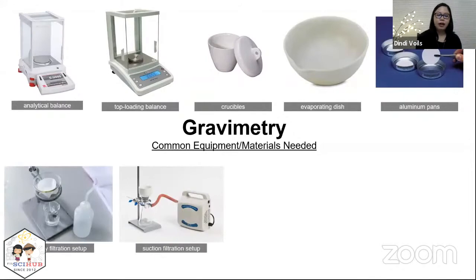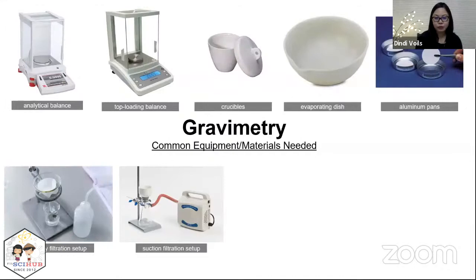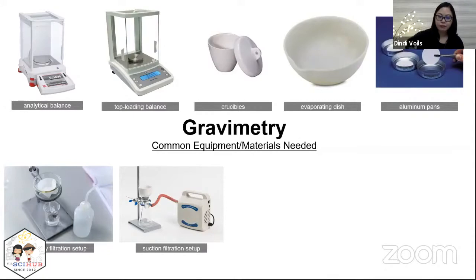You need a filtration setup — either gravity filtration or suction filtration. In gravity filtration, you allow gravity to separate the liquid portion from the solid portion of your mixture. In suction filtration, you utilize a vacuum pump to create a vacuum in the flask, which aids filtration and makes it faster compared to gravity filtration.